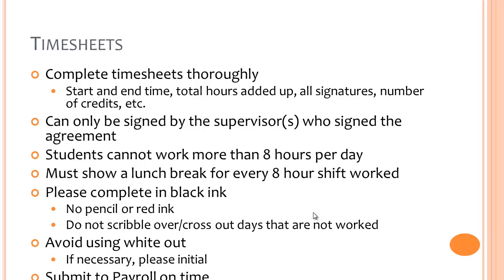Be sure to complete your timesheets thoroughly. Include a start and end time for each shift and record the total hours for the shift. The number of credits the student is taking must also be reported, and both the student and supervisor must sign it before submitting it to payroll. The supervisors listed on the Work Study Agreement are the only people who can sign off on timesheets. Students cannot work more than eight hours per day and must show a 30-minute lunch break for every eight-hour shift.